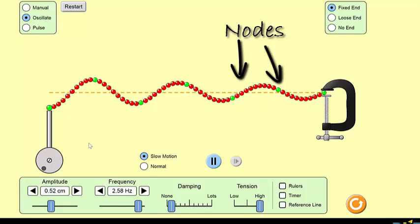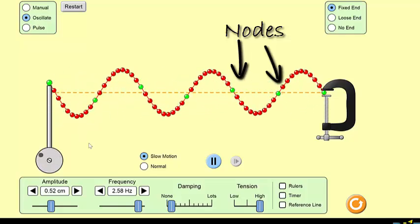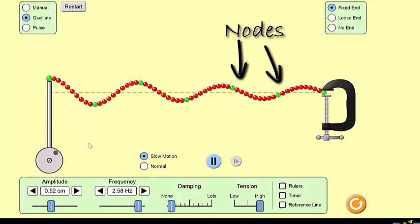At other points along the wave, we have our maximum displacement. At these points we call antinodes.